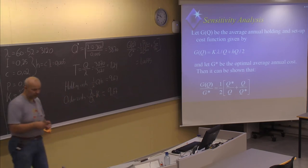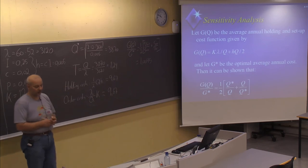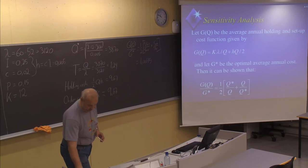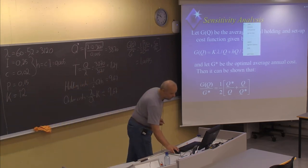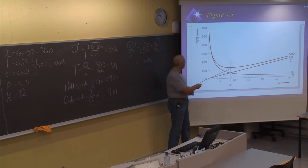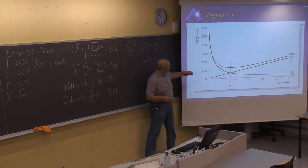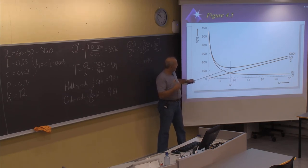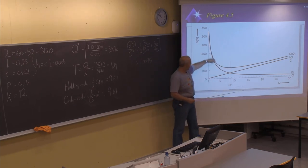A moderate deviation from the optimal Q will not lead to a very high increase in cost. Even if we don't know exact parameter values, an approximation leads to a good result if it's relatively close to the true optimal. Note also that the curve is not symmetric — a deviation toward a smaller Q increases cost more than the same deviation toward a larger Q. So when uncertain, you should generally prefer a higher order size.